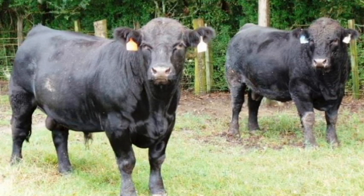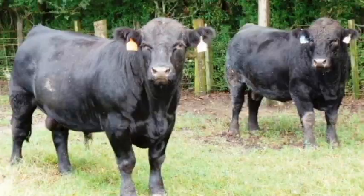EPDs, or expected progeny differences, are numeric values used to indicate the expected variation in the performance of calves sired by different bulls of the same breed when those bulls are mated to cows of similar genetic potential.